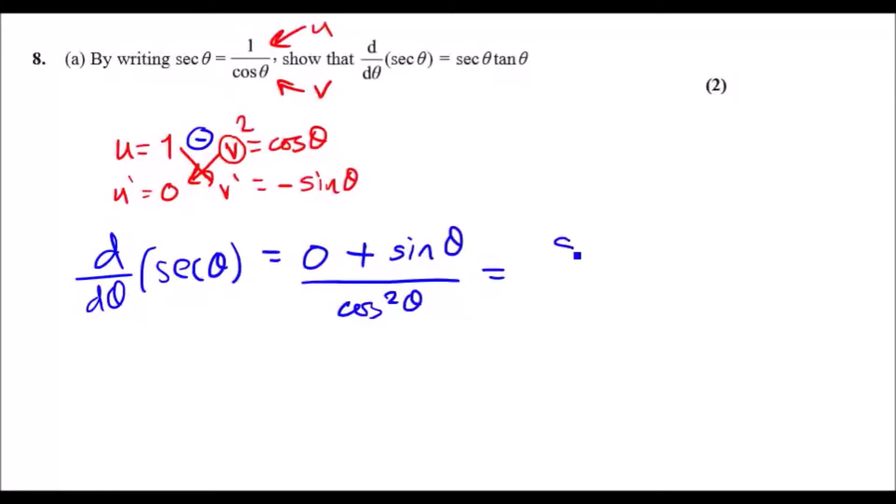All of this is over v squared, so cos² θ or cos squared theta. To make it look like the right hand side, partition this: sine θ over cos θ times 1 over cos θ. This quantity gives us a tan and the right side gives us a nice little sec θ.